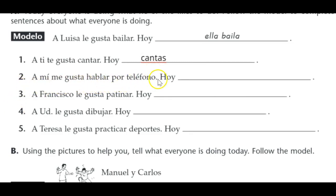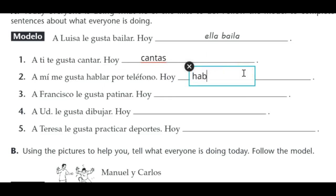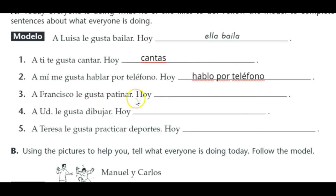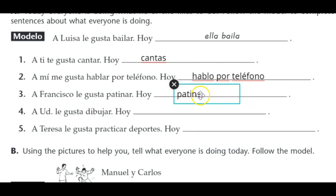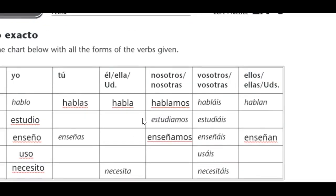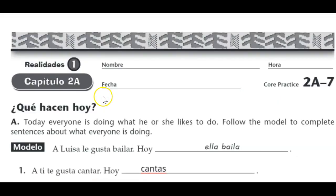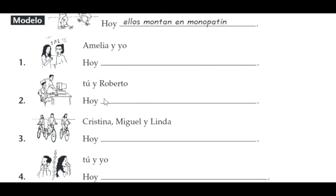Number two: A mí me gusta hablar por teléfono — I like to talk on the phone. So today: hablo por teléfono. Number three: A Francisco le gusta patinar — so Francisco is skating. Think about what pronoun it would be — he. Hoy él patina. Just keep going with that same pattern using the chart. I'll let you do the rest.